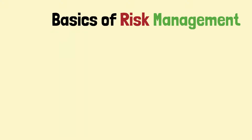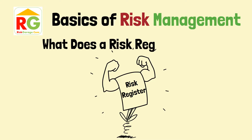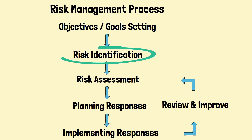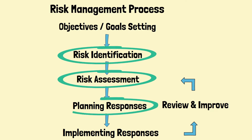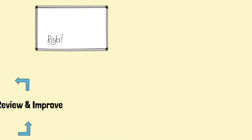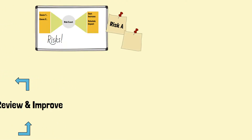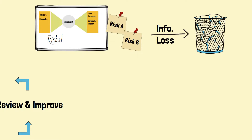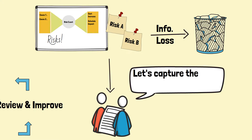This Basics of Risk Management series is brought to you by Risk Garage. What does a risk register do? In the risk management process, a lot of information is gathered from risk identification, risk assessment, and risk response planning. The risk information is sometimes scribbled on whiteboard or paper, and could be lost if it is not kept in a structured manner. Therefore, the risk register plays a very critical role in capturing and managing the risk information.